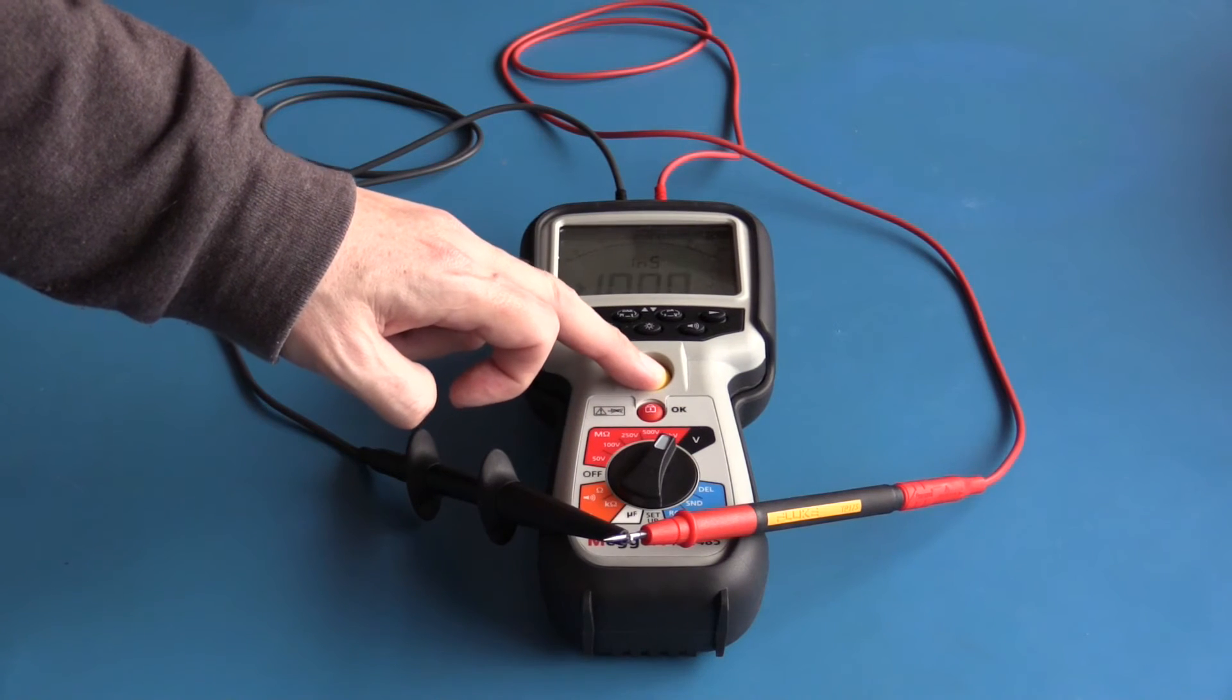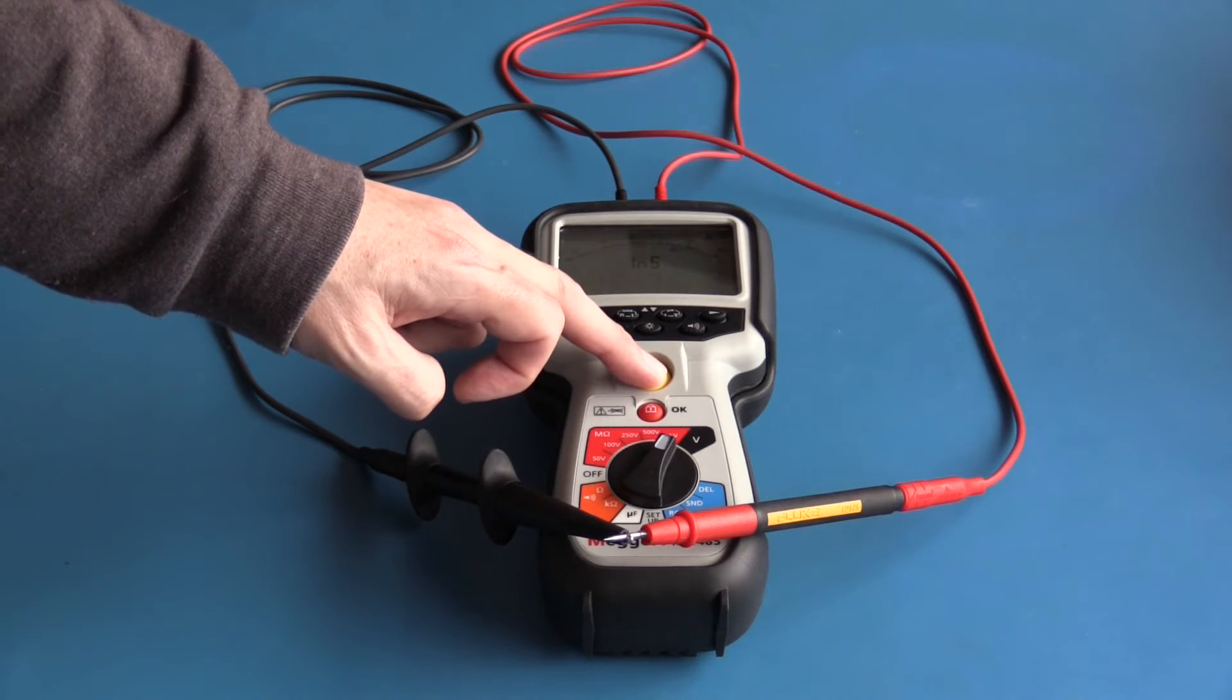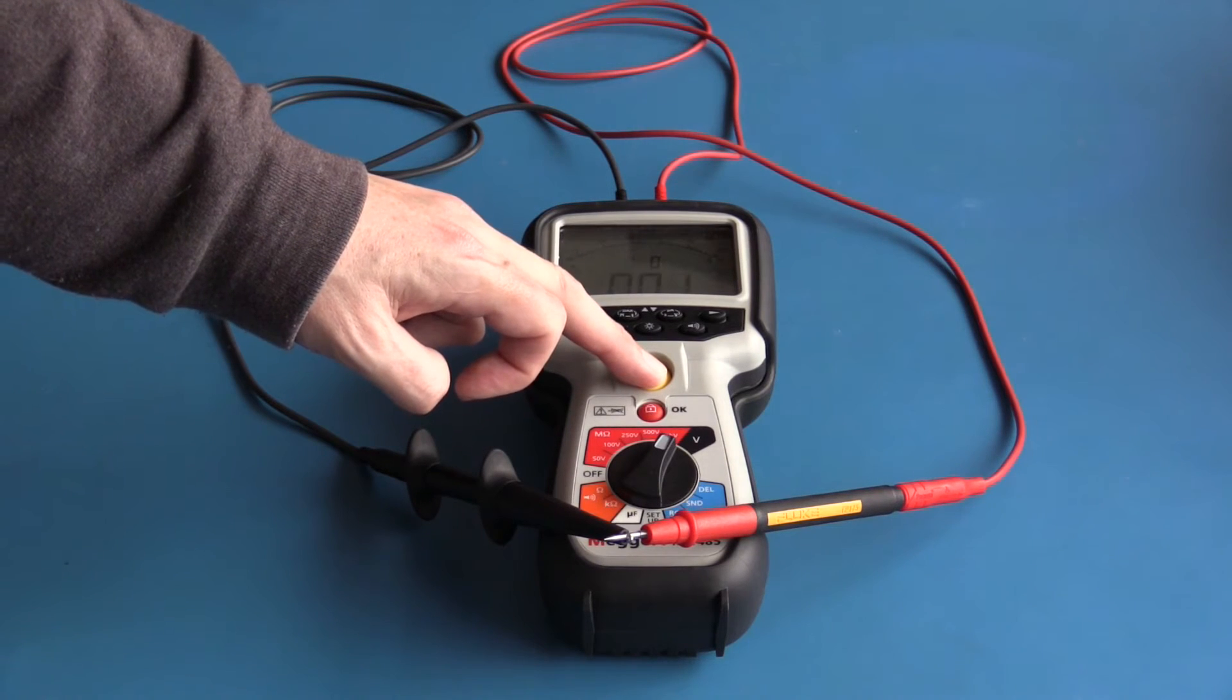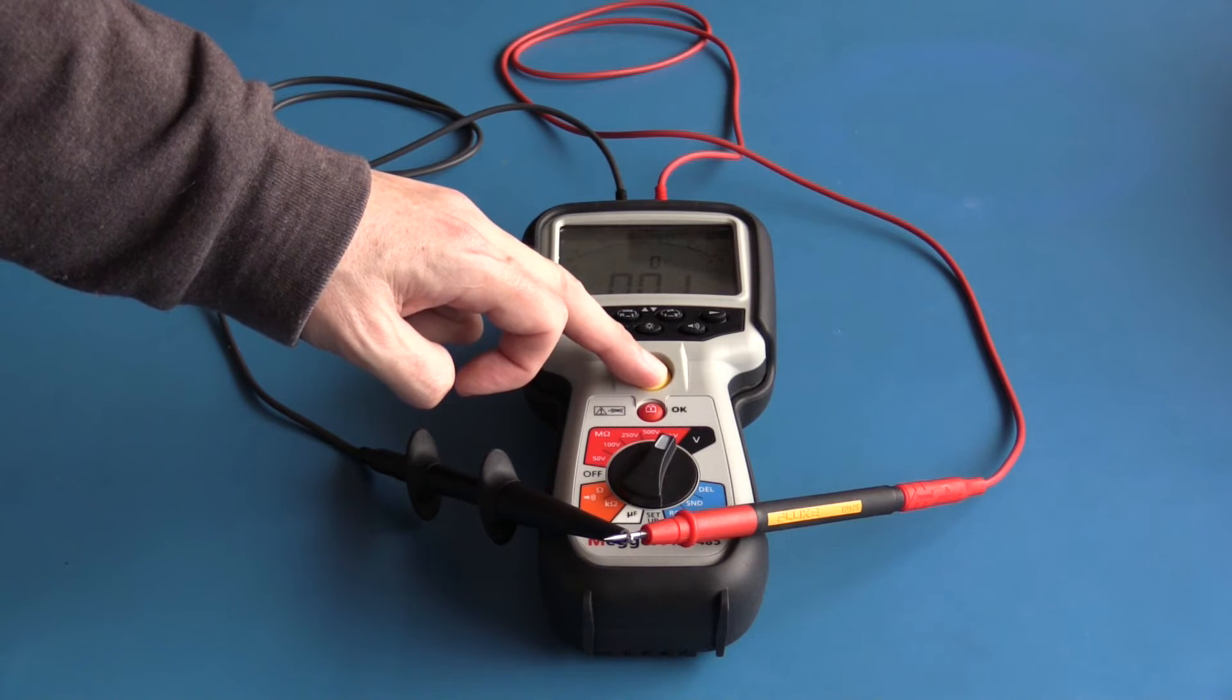I have now selected the 1000 volt range. This is the maximum voltage this meter will go up to. With the test lead shorted, I'm showing virtually no resistance.